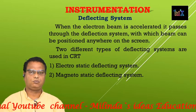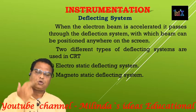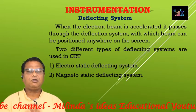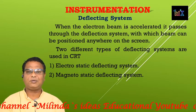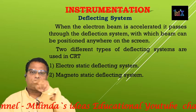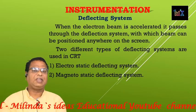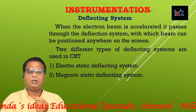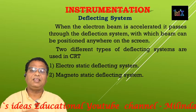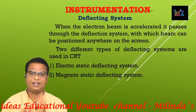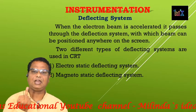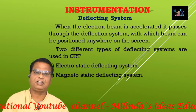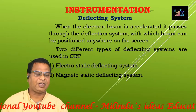There are two types of deflection systems: one is the horizontal deflection system and the second is the vertical deflection system. There are also two types of deflection systems used in CRT — the first one is the electrostatic deflection system and the second is the magnetostatic deflection system.